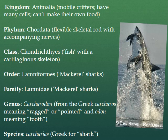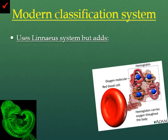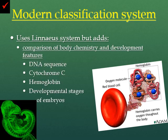As you can see, we covered all these categories from kingdom up to species. The modern classification system that we use builds on Linnaeus' system of physical traits but adds a few things — for example, the comparison of body chemistry and developmental features. It looks at the DNA sequence, certain proteins found inside the body such as hemoglobin or cytochrome C, and we'll even also take into account the developmental stages of embryos, which can be seen in the lower left-hand corner down here.